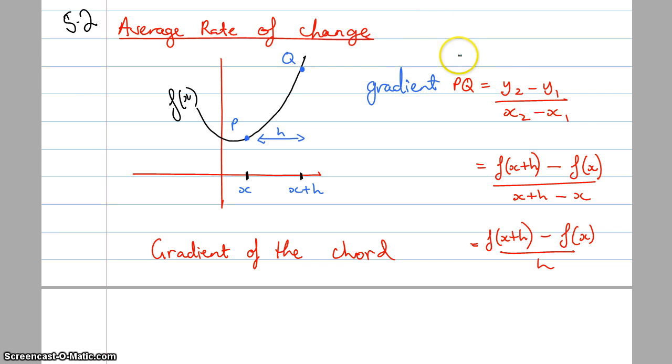So if I want to work out the gradient between these two points, or the chord that connects these two points, I simply do the same formula I've been doing since year 9, y2 minus y1 over x2 minus x1. But it looks a little bit different for us. y2 is actually whatever the y value is when x is x plus h, and the equation of the graph is f of x. So that's f of x plus h minus f of x, all over the two x values, so x plus h minus x. And that crunches down to f of x plus h minus f of x all over h. And this is the gradient of the chord between two different points.